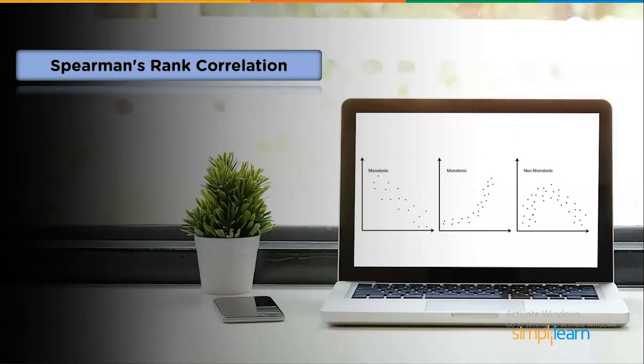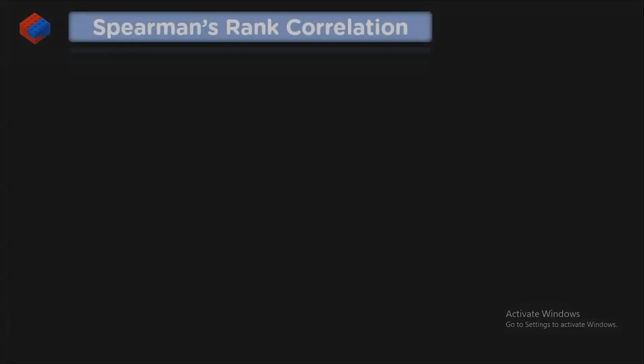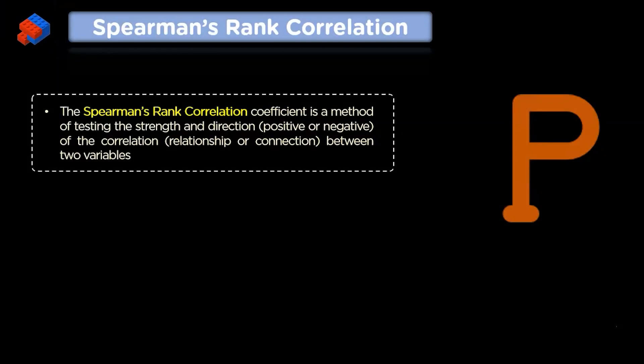Now we'll discuss Spearman Rank Correlation. The Spearman Rank Correlation is calculated to check the agreement on the ranking of the results between the two groups. Without the consideration of normality or equal variance of data, the Spearman Rank Correlation Coefficient focuses on the differences in the rank orders of data rather than the differences in the means.